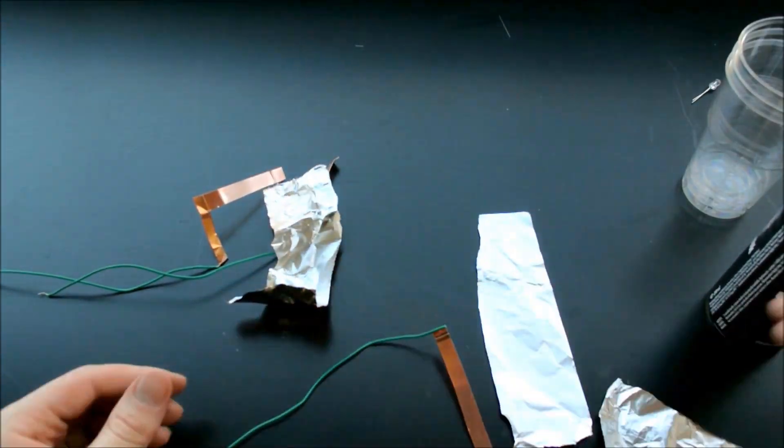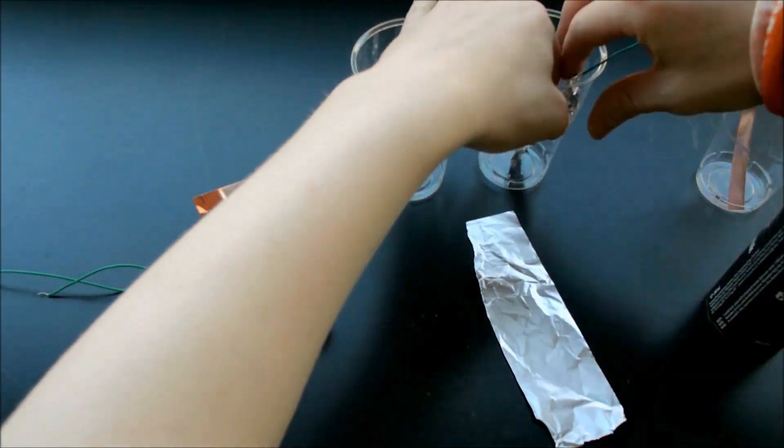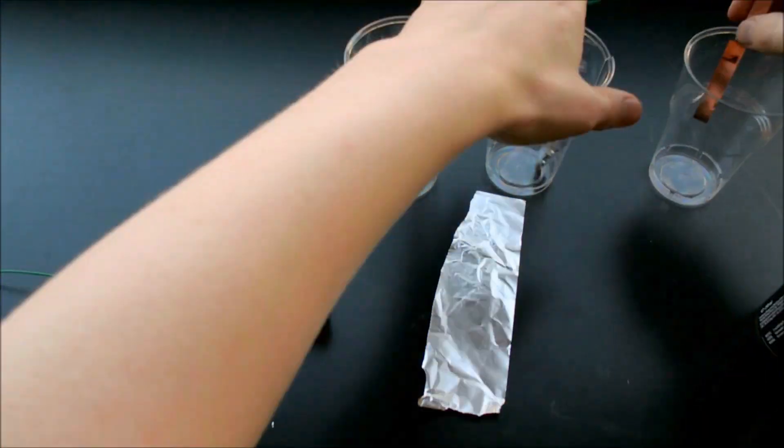And now that the copper electrodes are done, we're going to be using a less noble metal, aluminum, for the other set of electrodes.